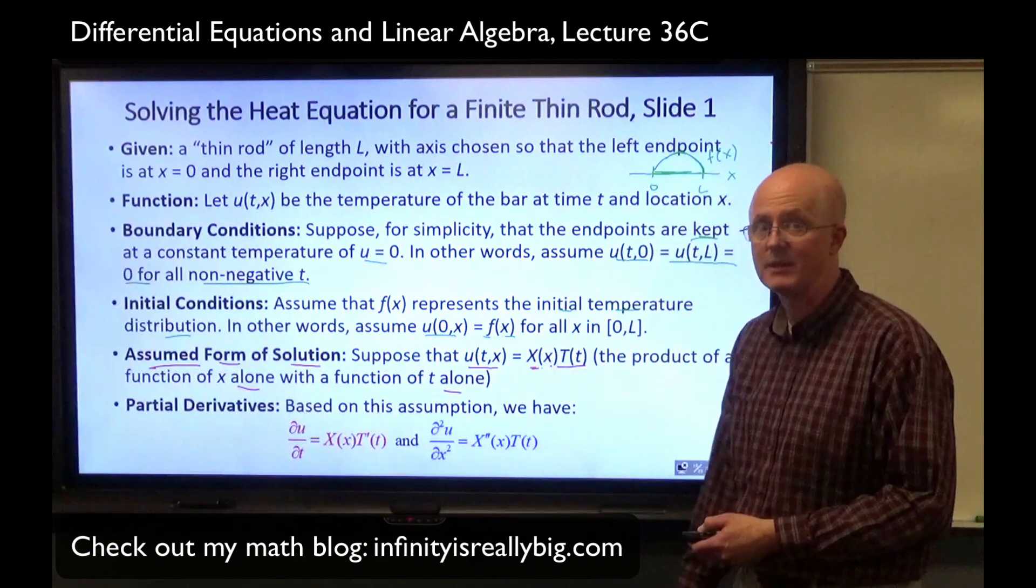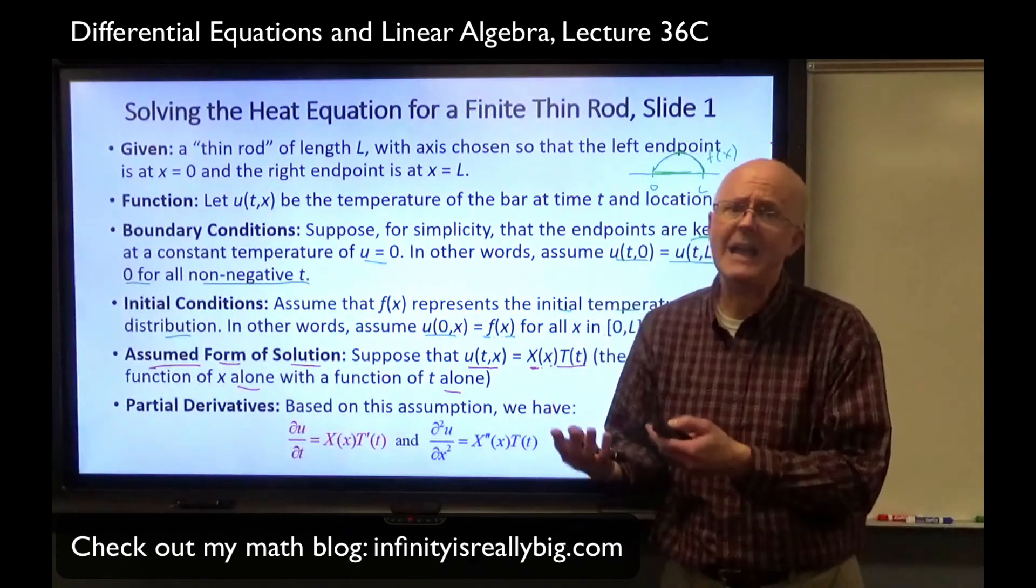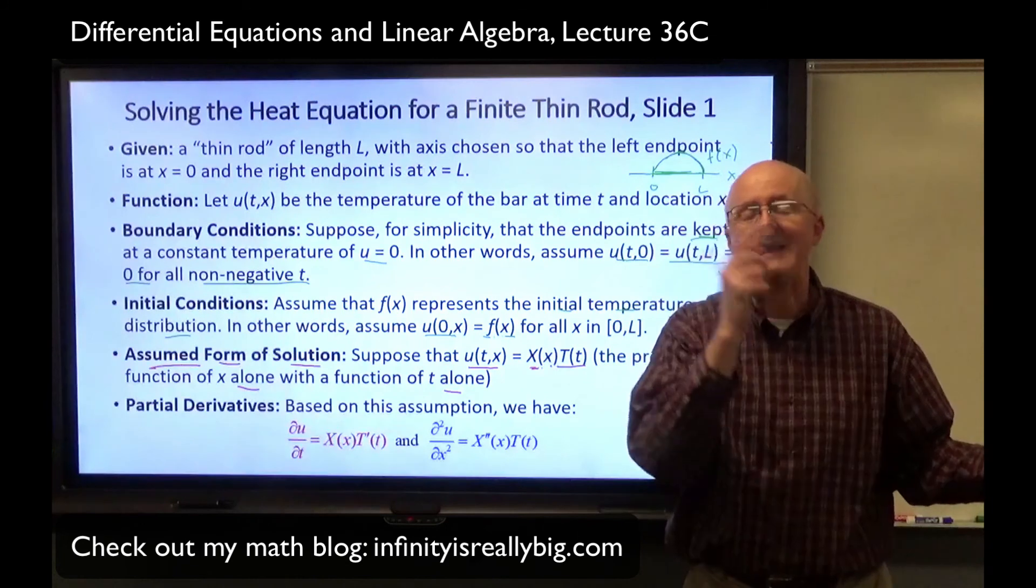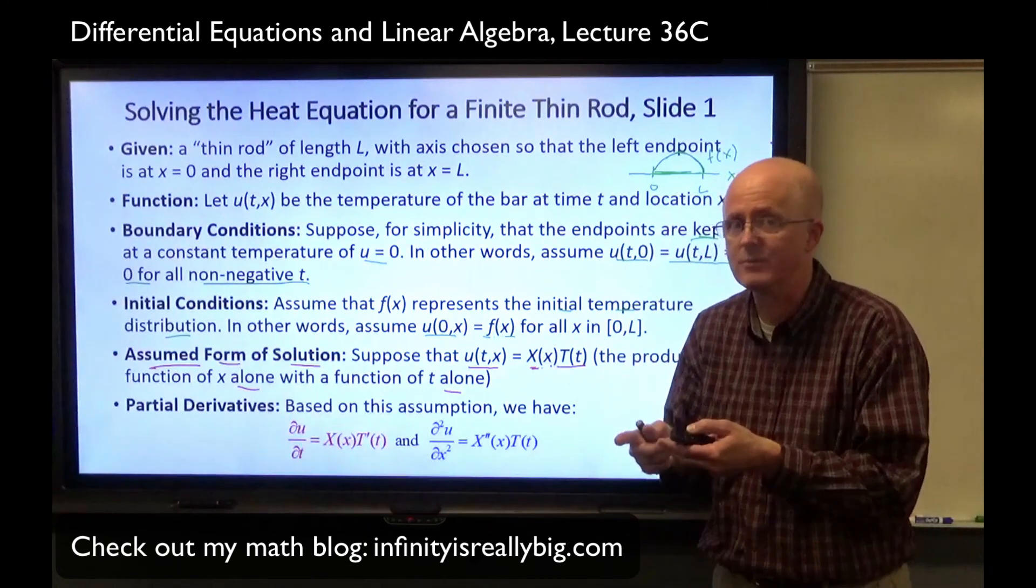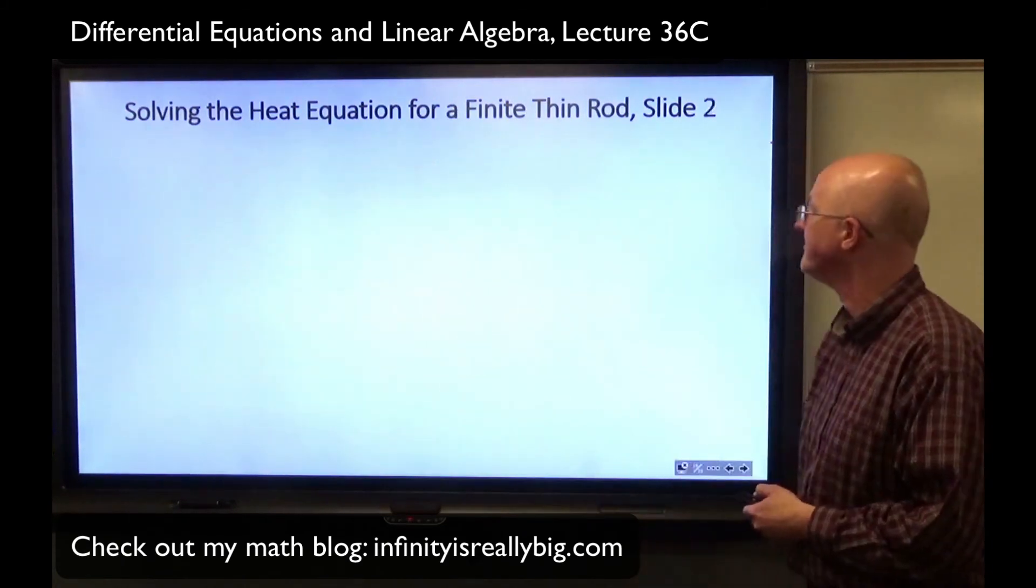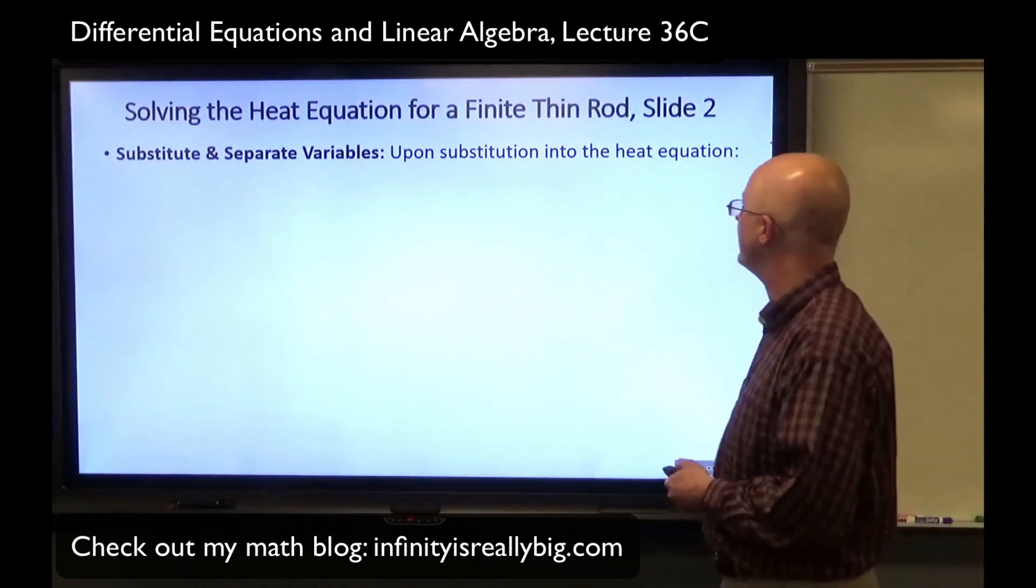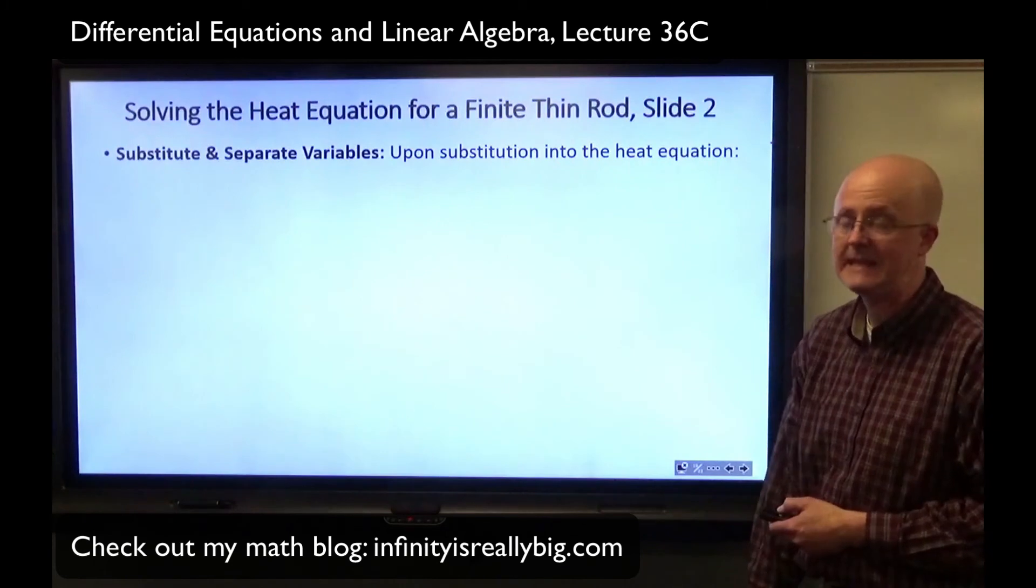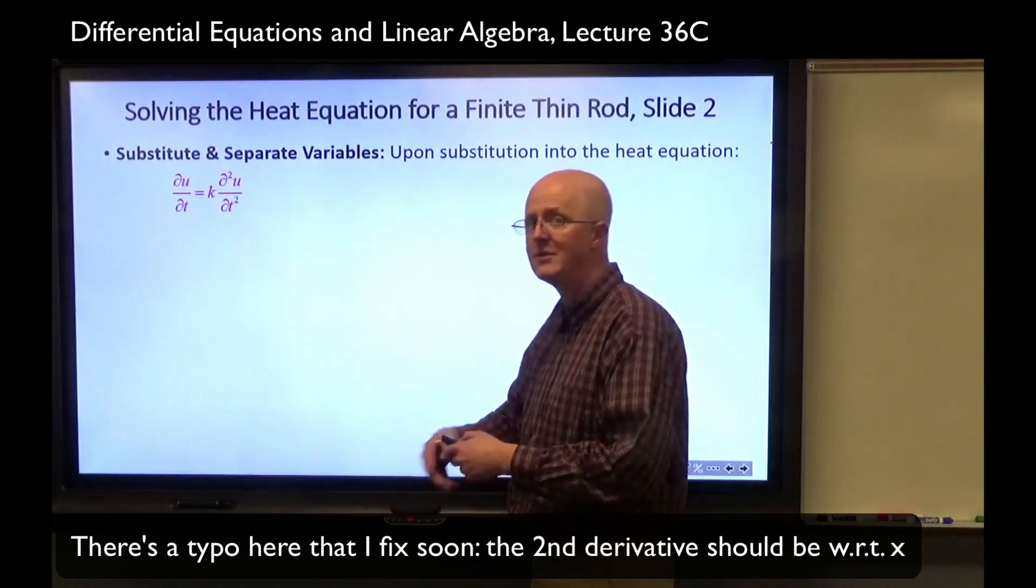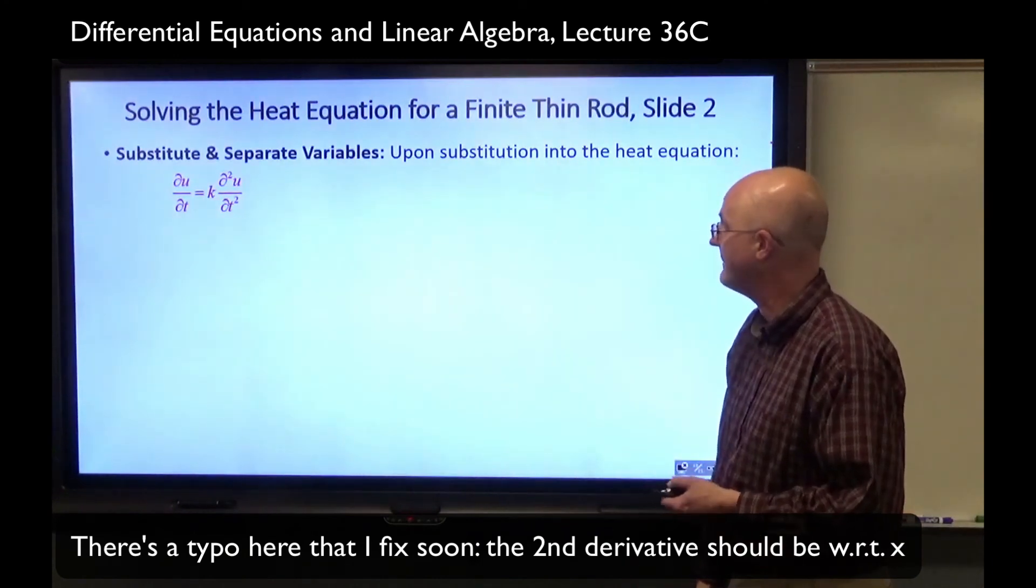Second derivative of u with respect to x twice is X double prime times T of t. Assuming these things are solutions, go ahead and plug them into the heat equation and see what you can conclude. The logic here is we're assuming we've got solutions that look like this, and we're wondering what would they be. That does not actually prove they are solutions. It just tells you possible solutions. You'd have to verify that they truly are in the end.